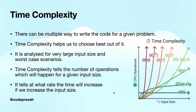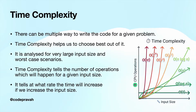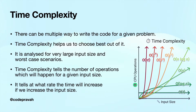For a given problem, there can be multiple ways to write a program. Now there is a question: how to choose the best out of them. There can be multiple parameters on the basis of which you can decide the best. The most popular metrics are time and space complexity.